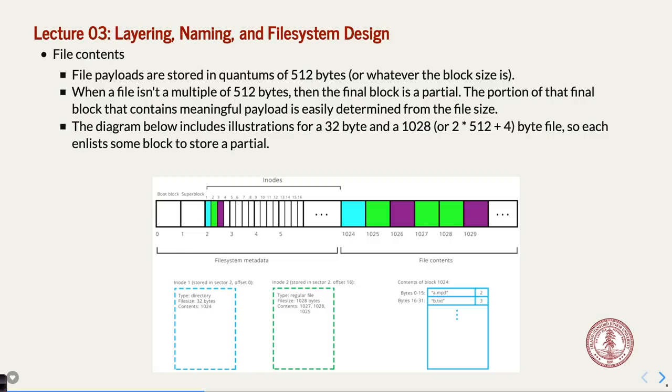Even a zero-byte file would have one block associated with it. If the file is more than 512 bytes, it takes more blocks in 512-byte chunks. The last block, if the file size is not a multiple of 512, is just a partial block. So a 513-byte file has two blocks, and 1025 bytes would be one more block on top of that.